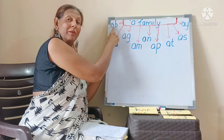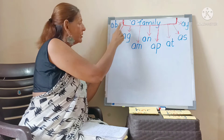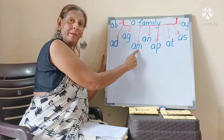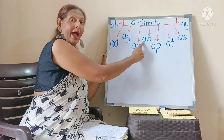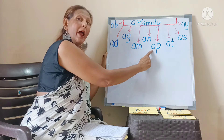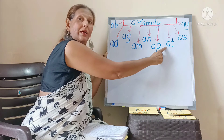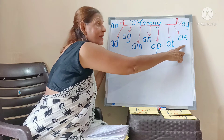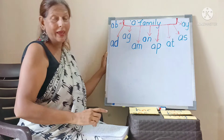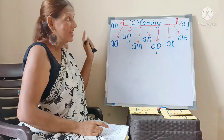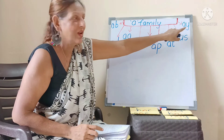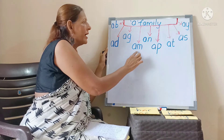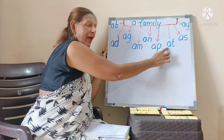Ab, ad, ag, am, an, at. So children, we have already completed ab, ad, ag, am, an, and at. The 'ay' has a different sound.